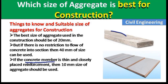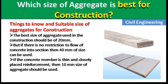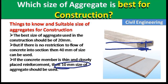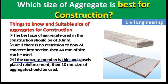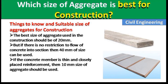For example, if we are constructing a slab its thickness is very thin. A beam may have a thickness of 1 to 1.5 feet, but a slab may be only 4 to 6 inches thick. In such thin members, we can use 10 mm size aggregate for best strength. So if the concrete member is thin and closely reinforced, 10 mm size of aggregate should be used.